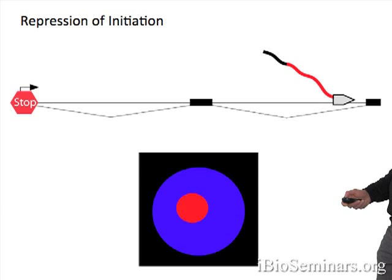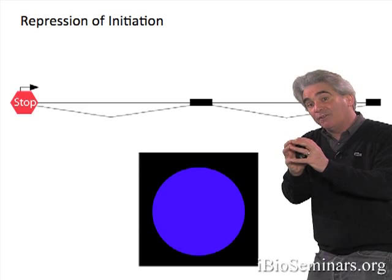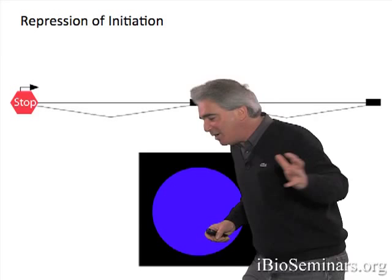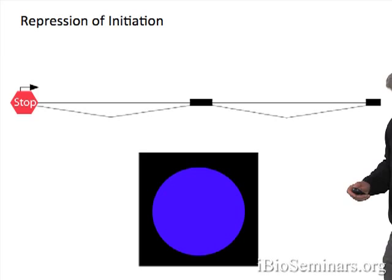And this is what we see. We obtained evidence that snail works at the level of transcriptional initiation, blocking the release of polymerase. But the polymerase that had already been released completes transcription, even after the onset of snail repression.